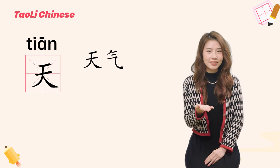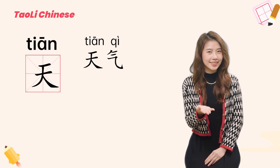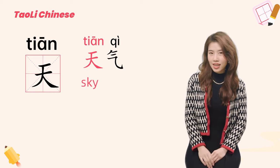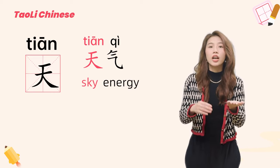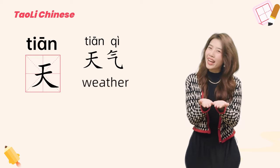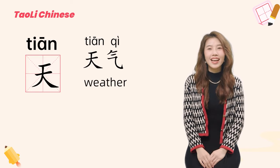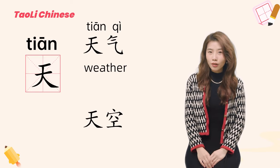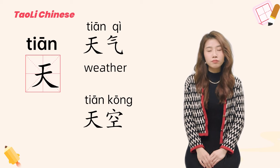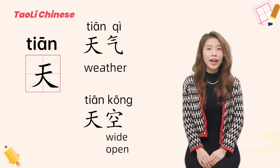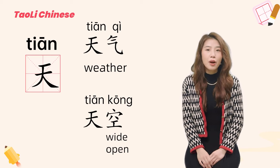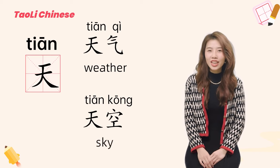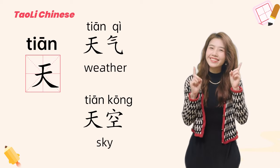Here are some examples using the character 天. 天气: 天 means sky, 气 means energy, so 天气 means weather. 天空: 空 means wide and open, and the sky is big enough to contain everything, so 天空 means sky.